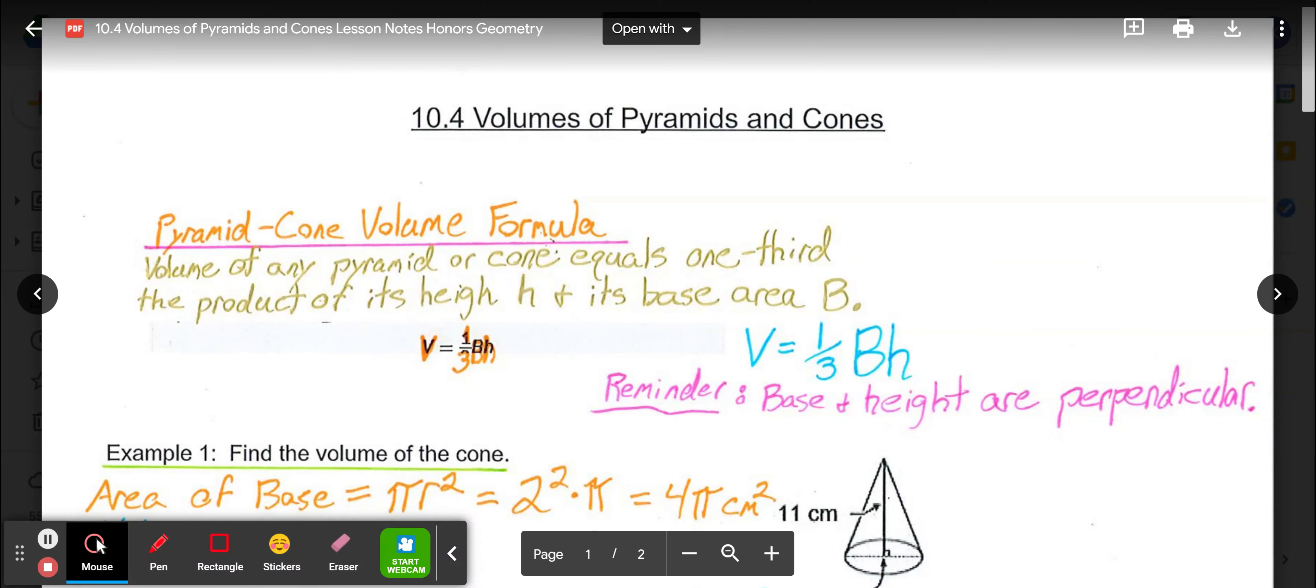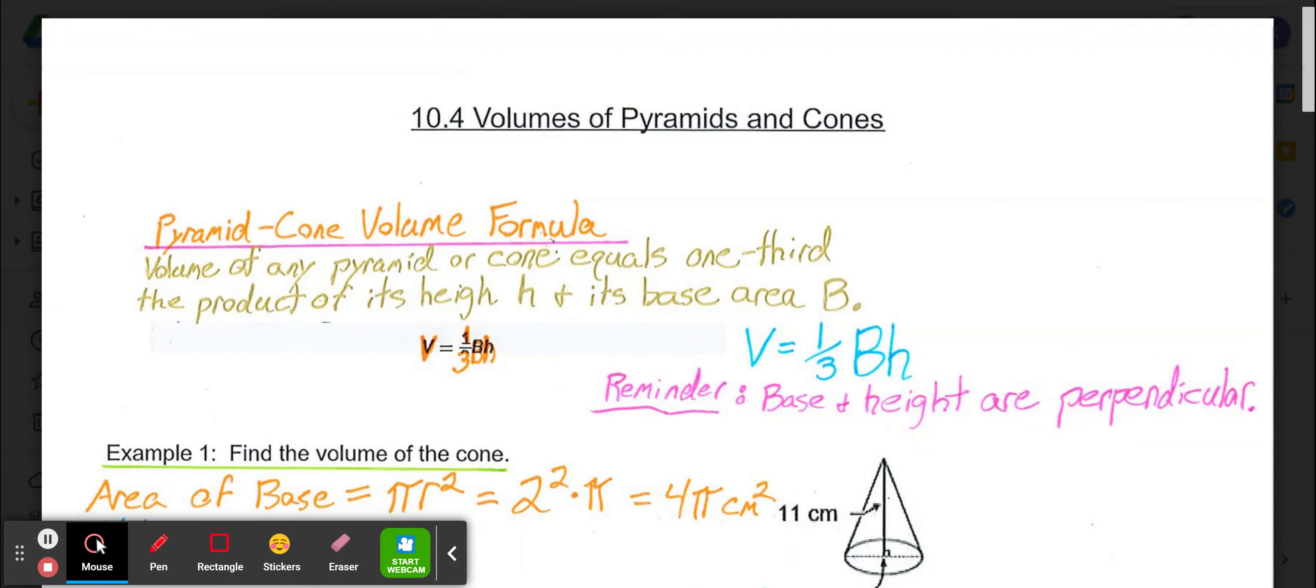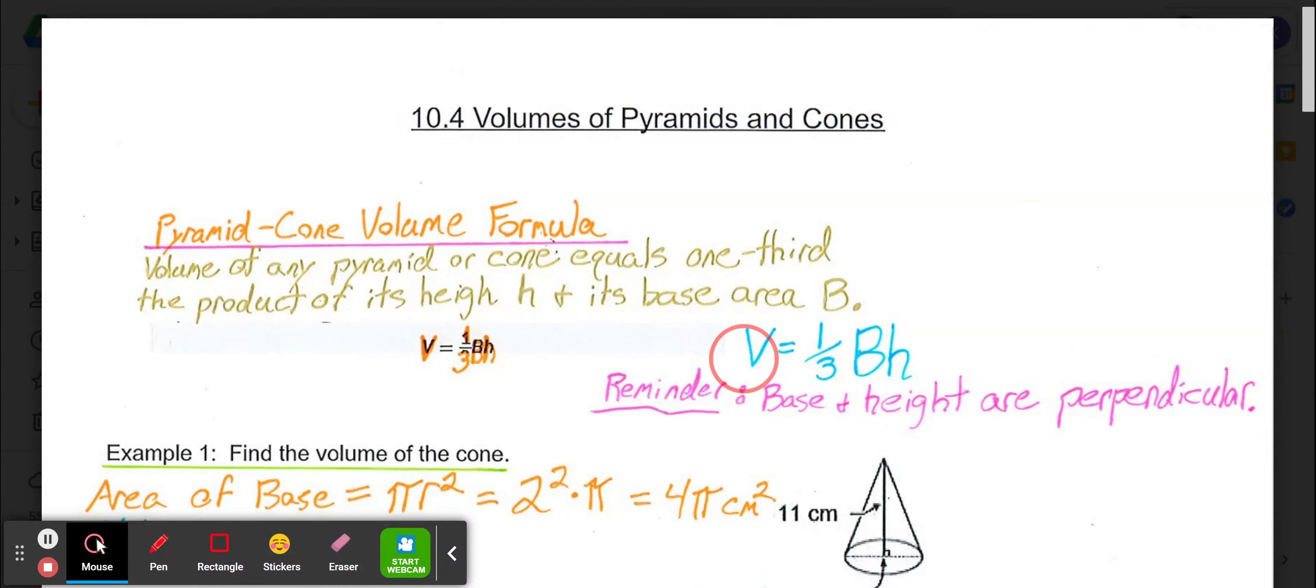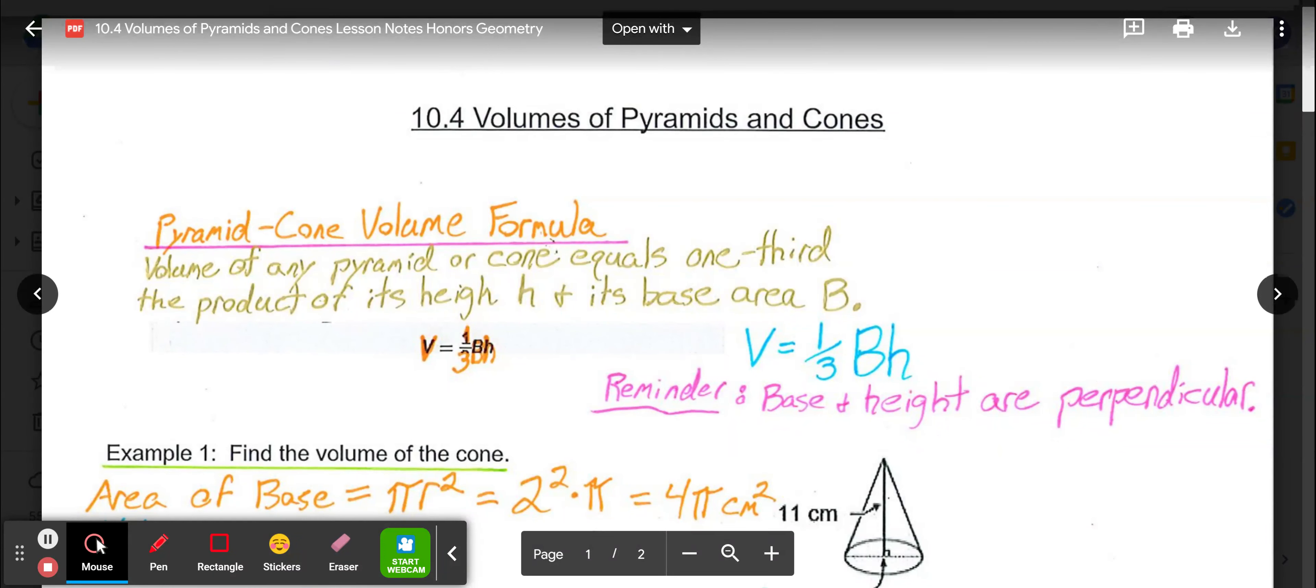Our formula for both pyramids and cones is the volume of any pyramid or cone equals one-third the product of its height H and its base area represented by capital B. So our equation is V equals one-third B times H. Just a reminder that base and height are perpendicular. Anytime you're coming across those terms in geometry, they're referring to a perpendicular angle for their intersection.